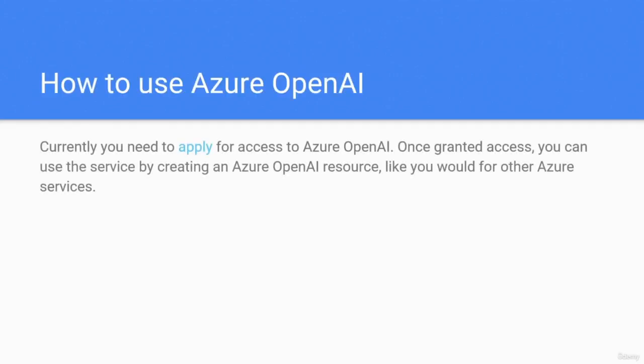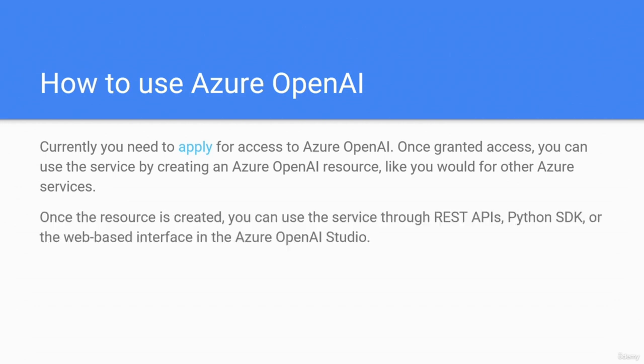How to use Azure OpenAI? Currently you need to apply for access to Azure OpenAI. Once granted access, you can use the service by creating an Azure OpenAI resource like any other Azure service. Once the resource is created, you can use the service through REST APIs, Python SDK, or the web-based interface in the Azure OpenAI Studio.